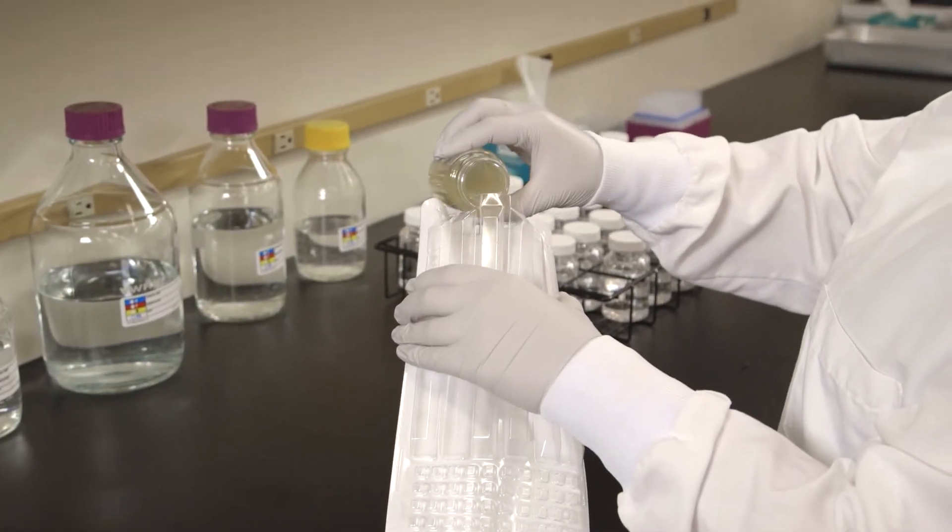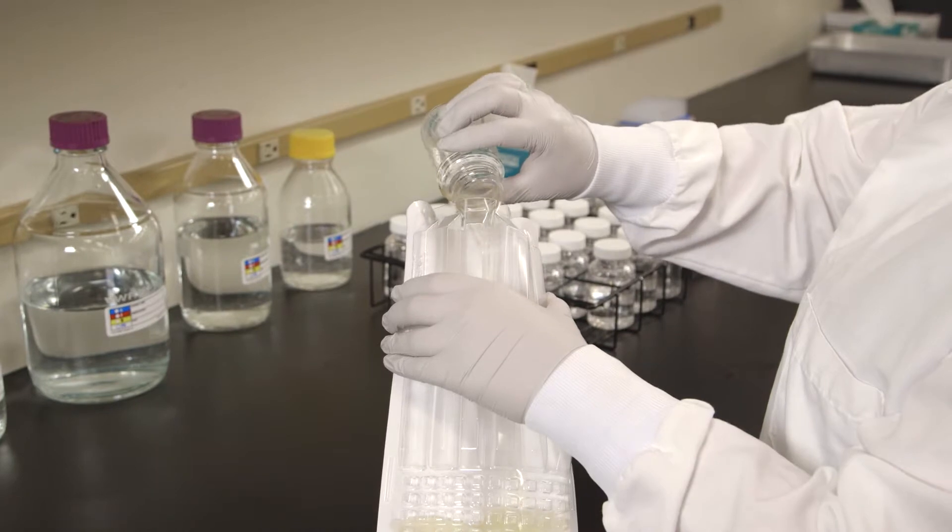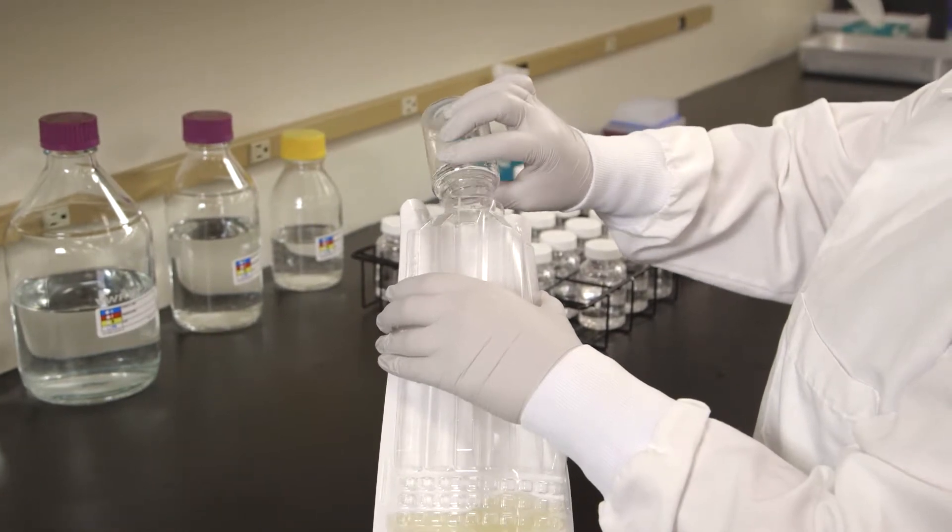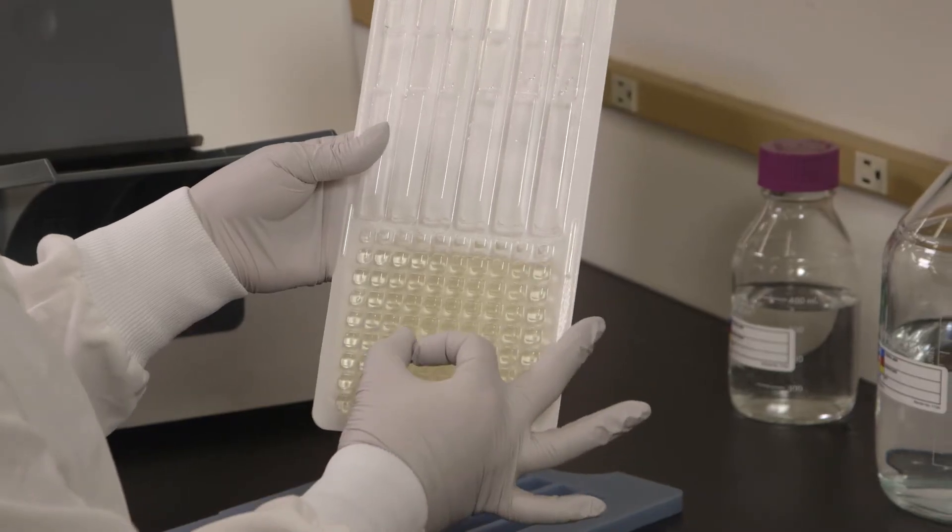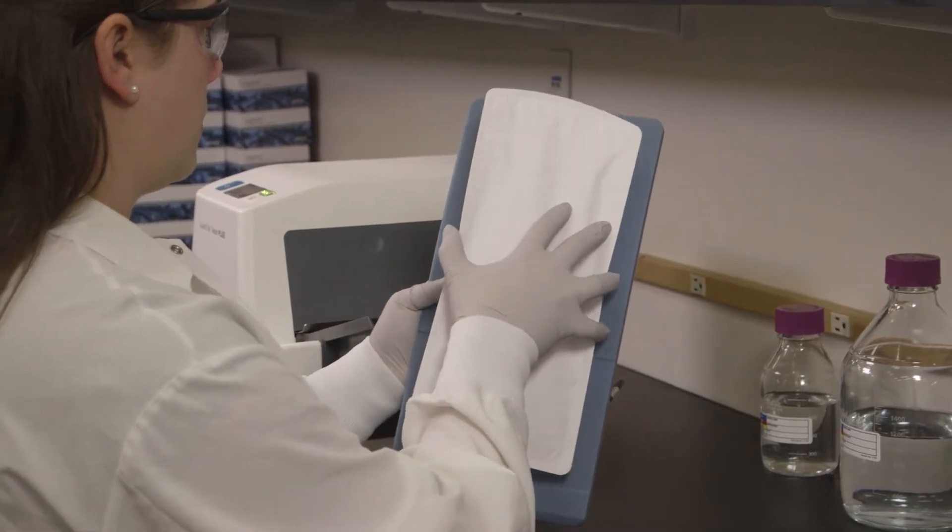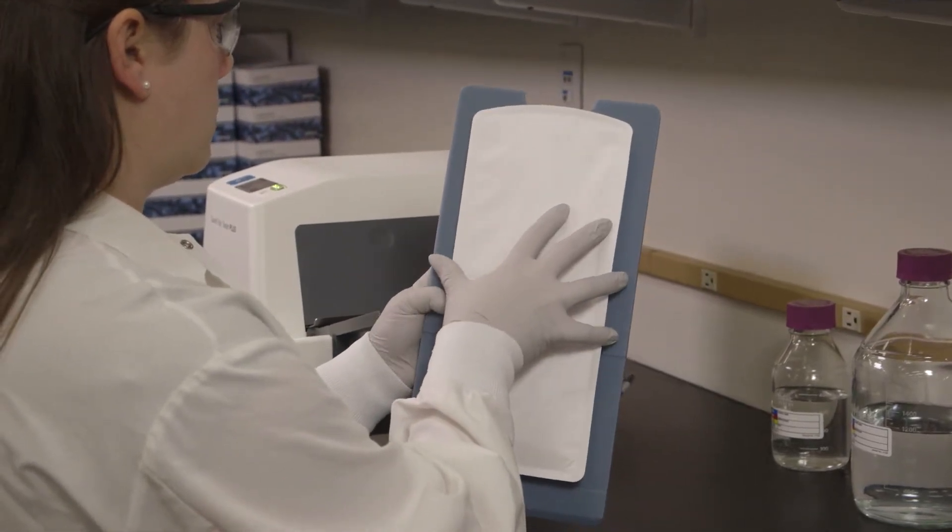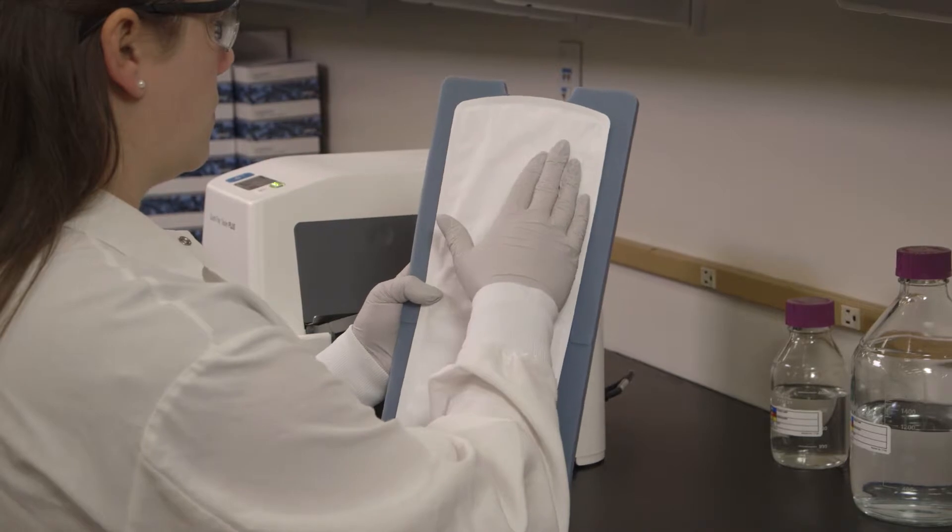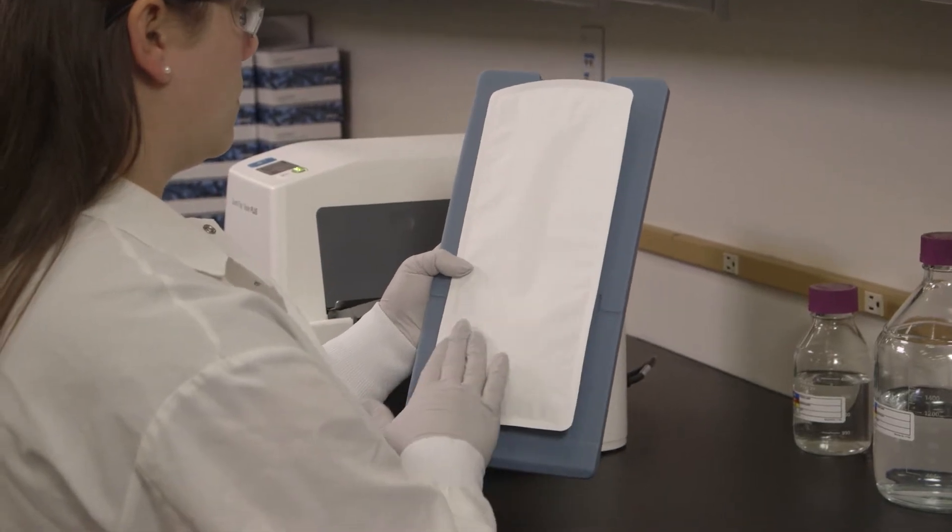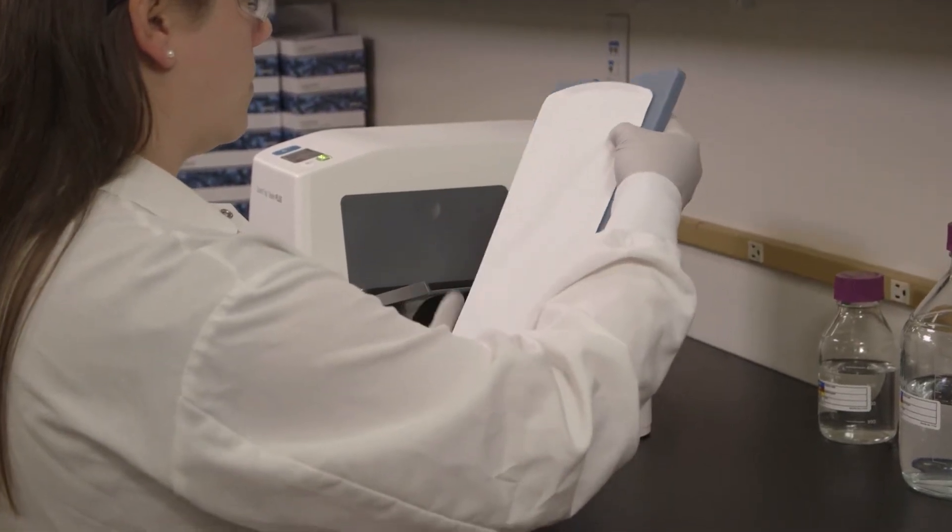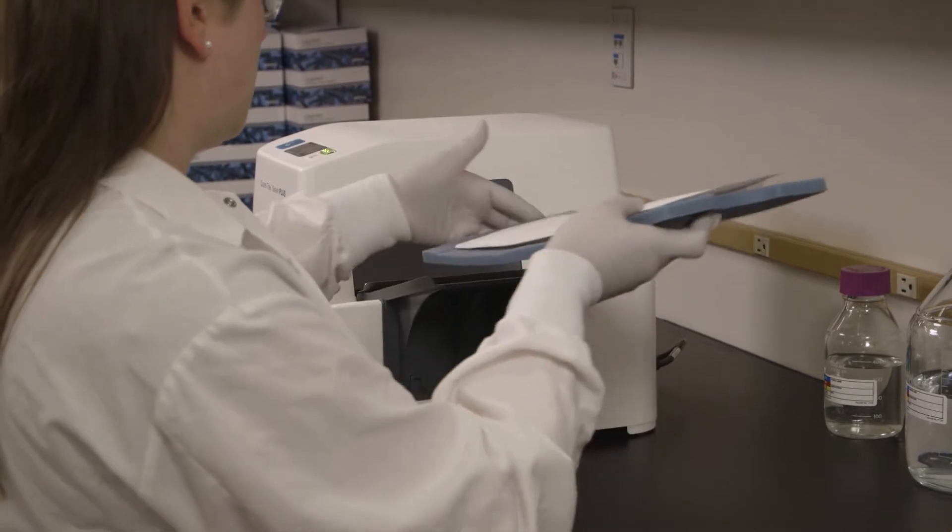Aseptically pour the sample mixture into the tray. Tap or flick the tray to remove air bubbles. Immediately place the filled tray on the rubber insert, making sure each well fits its corresponding hole. Push the insert with tray into the sealer until the sealer grabs the tray and pulls it into the slot.